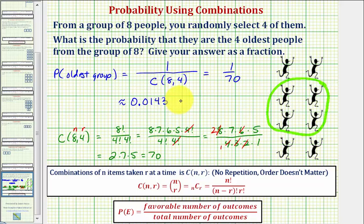To convert to a percentage, we multiply by one hundred. Remember the decimal point to the right two places, and then add a percent sign. So the probability is approximately one point four three percent.